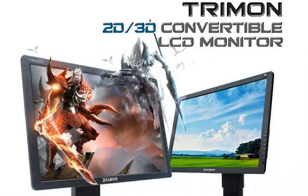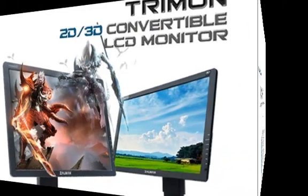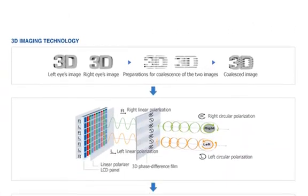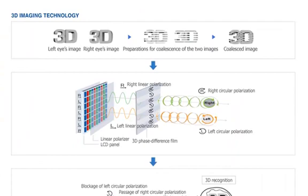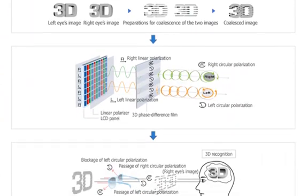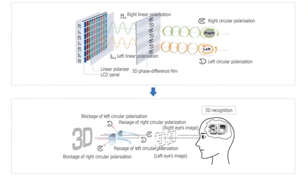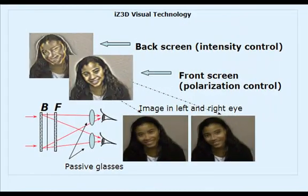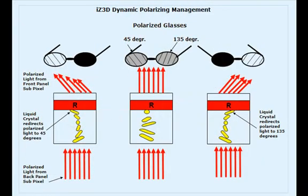In particular, S3DPresenter supports the following output methods: interlaced monitors, those that send every other scanline to alternating eyes; and the IZ3D monitor, which uses a unique encoding method to control how much of each pixel is seen by each eye.